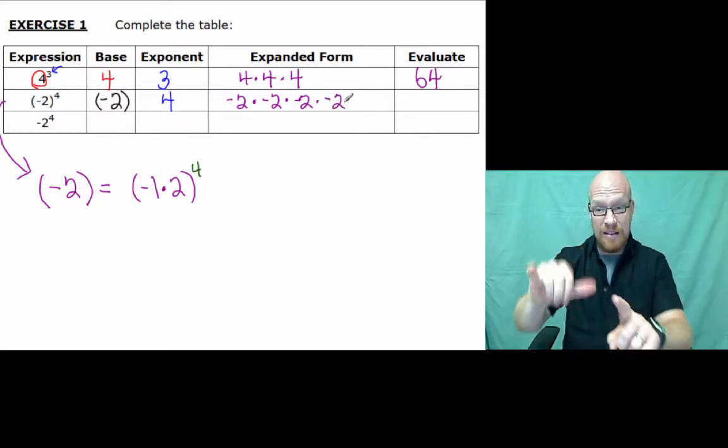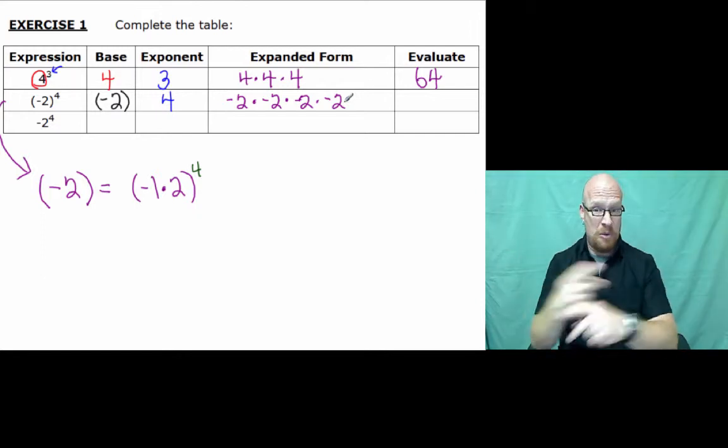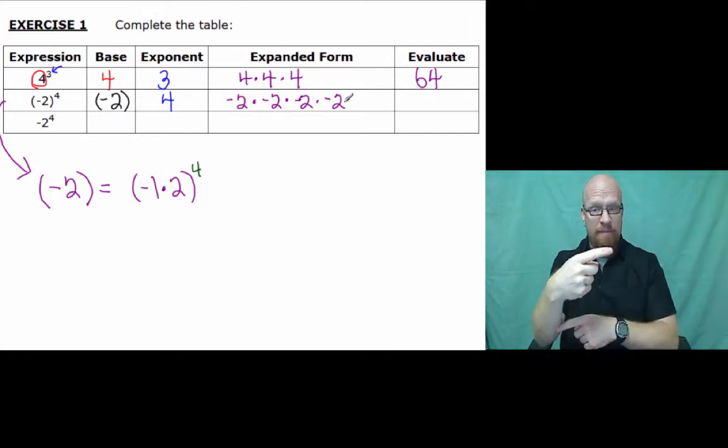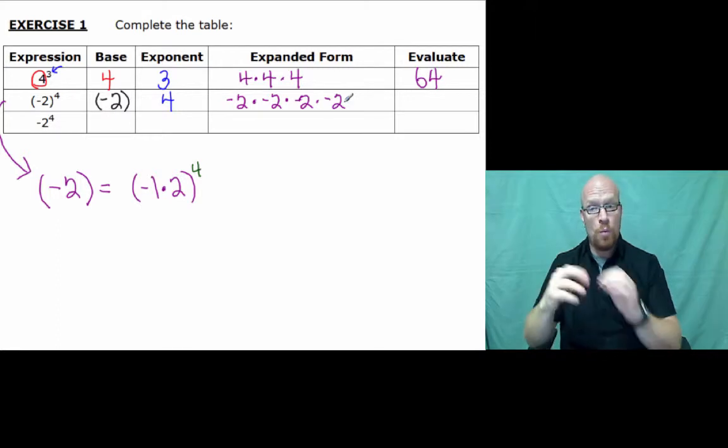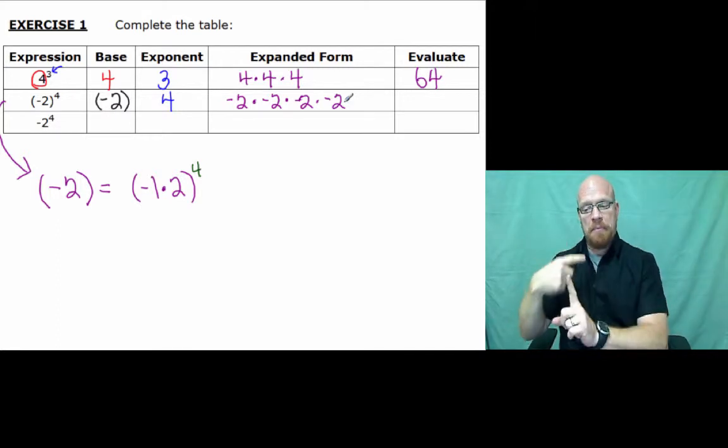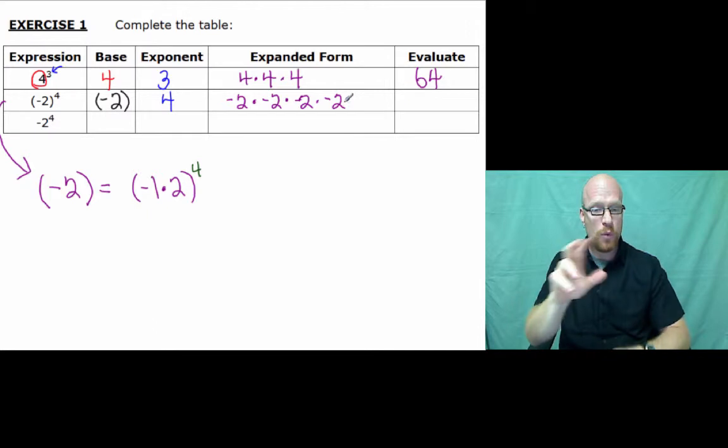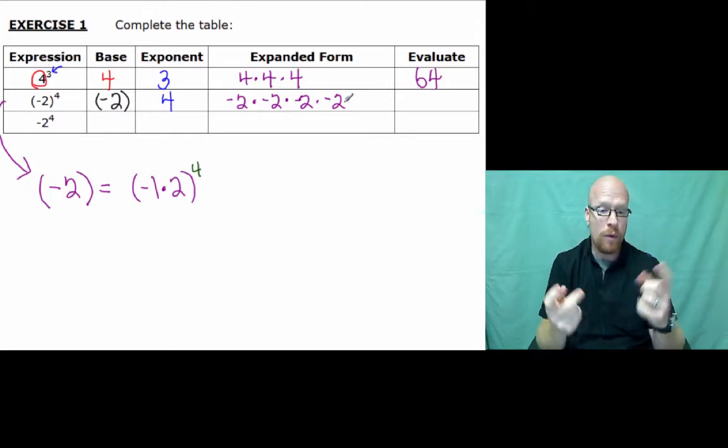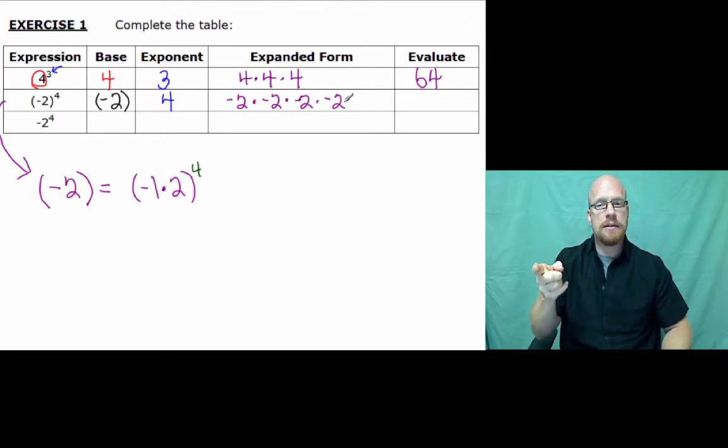Now, as we multiply these together, remember, a negative times a negative is positive, but we have two other ones, a negative times a negative is positive. So, therefore, our answer will be positive. So, 2 times 2 is 4, times 2 is 8, times 2 more is 16. So, the answer would be positive 16.